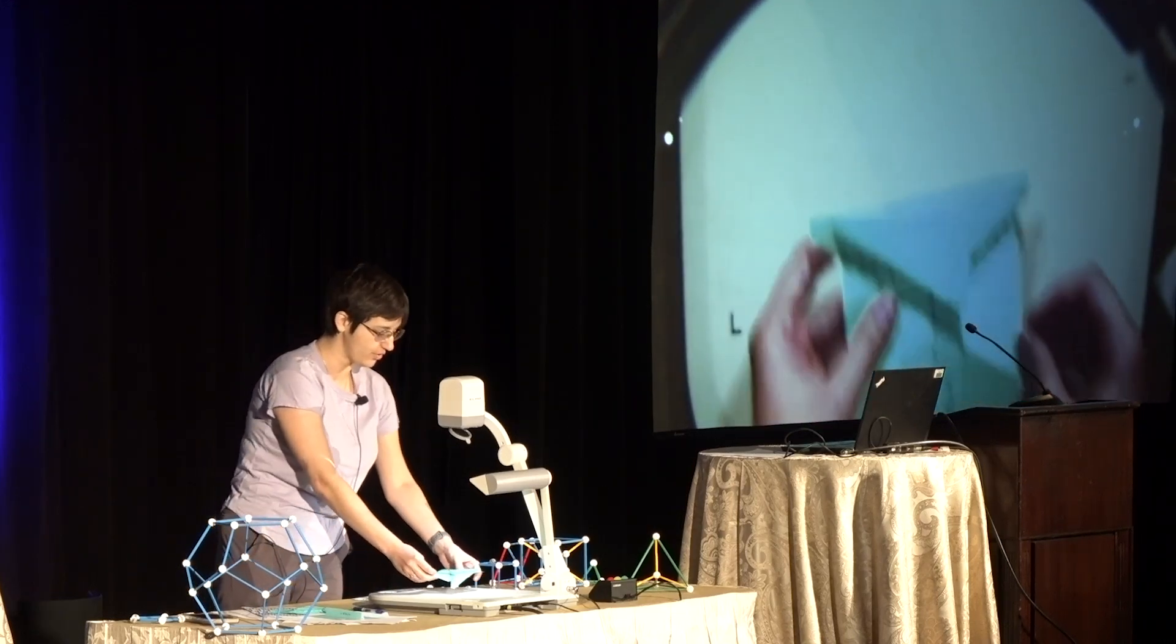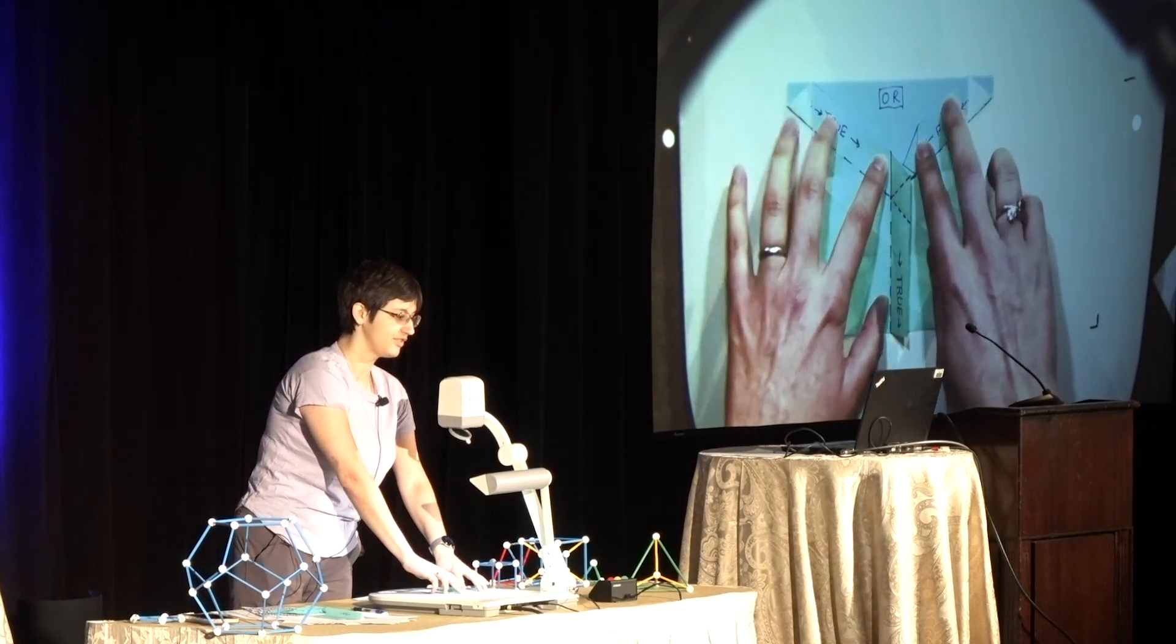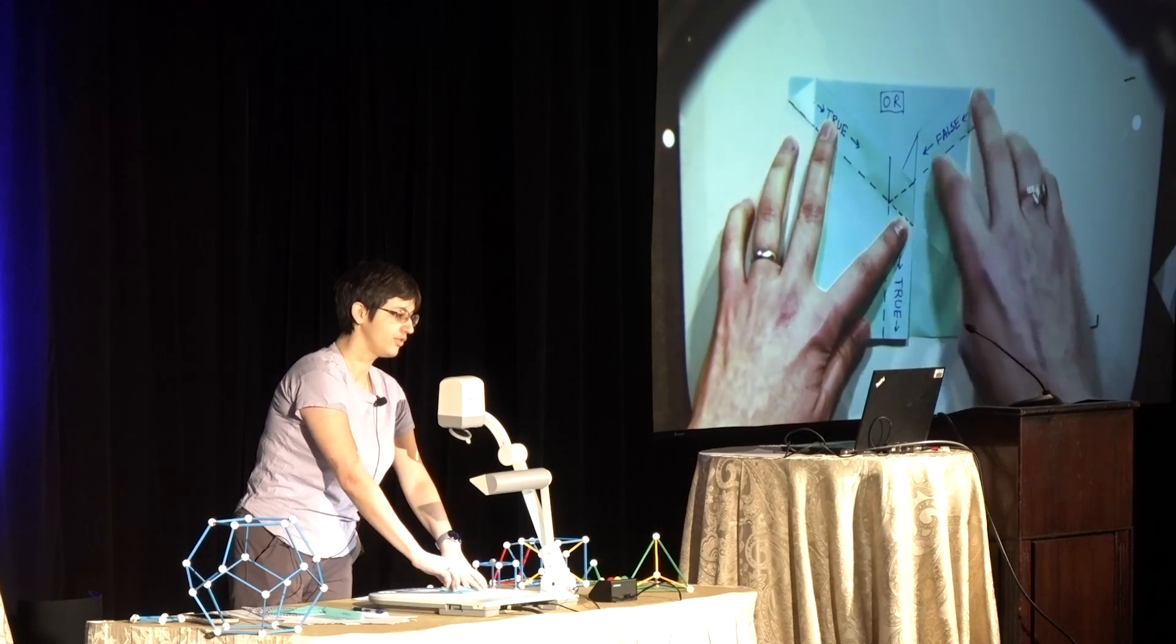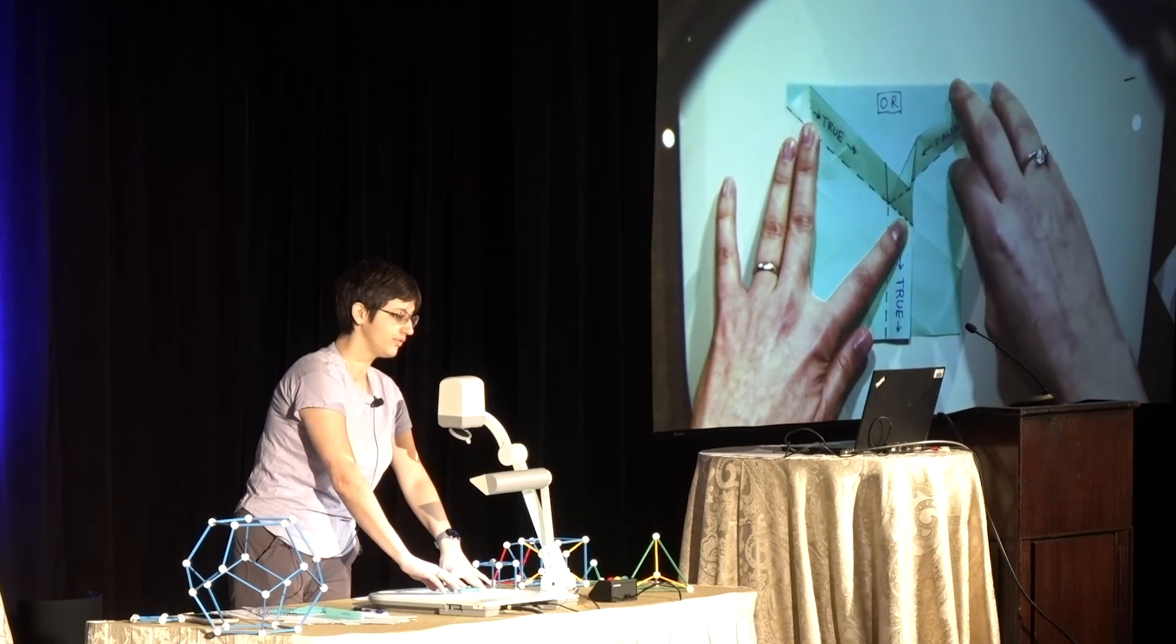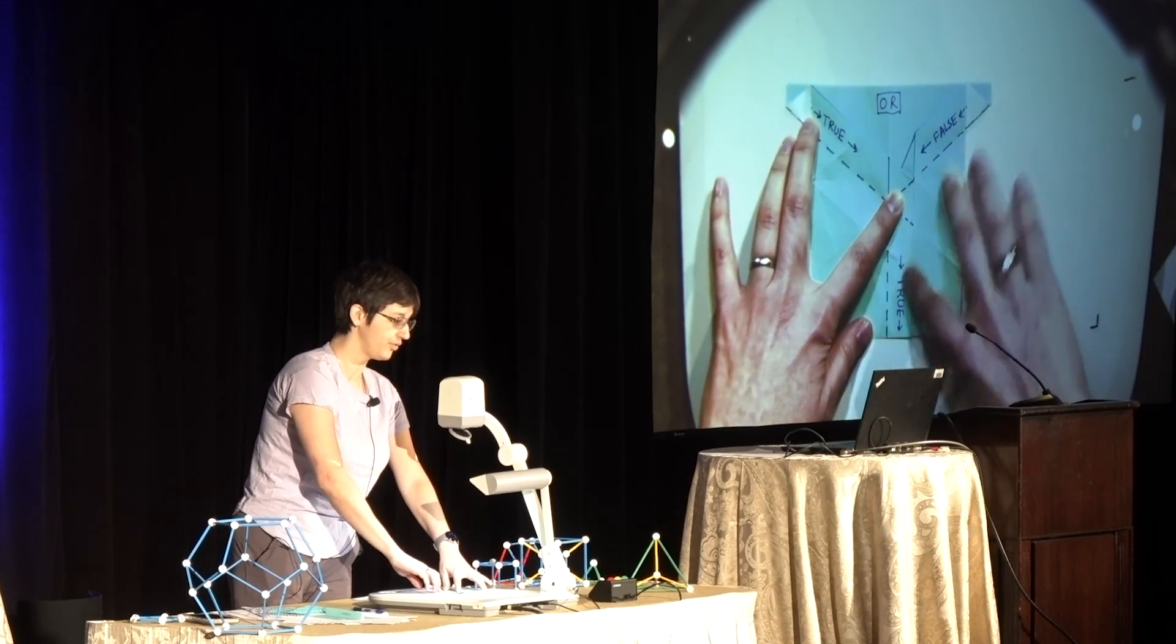And now you can build a gadget. So this is an OR gate. So you have two pleats coming in, true and false. And it will fold true.